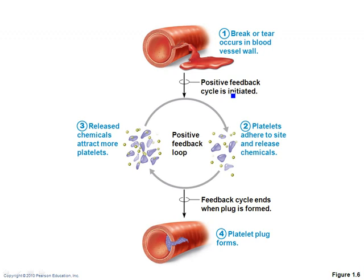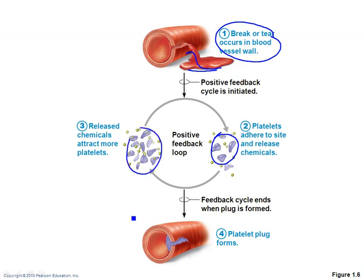Blood clotting works the same way. If you cut yourself, you don't want to bleed to death. That starts a cascade where platelets start to adhere to each other. The more platelets there are, the more chemicals are released; the more chemicals are released, the more platelets come in — and you form a blood clot. It's real fast and real effective, because you want more platelets to block that blood. Labor, delivery, and blood clotting are pretty much your only positive feedback mechanisms.